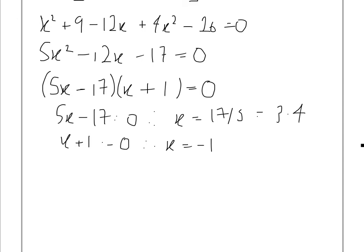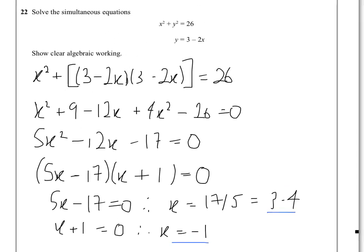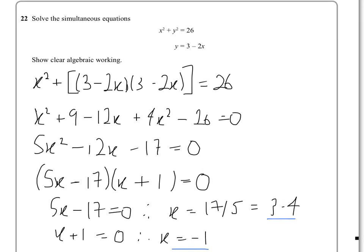Now what you do is you get both these values, both the 3.4 and the minus 1, and you substitute them into either equation, but obviously the easiest one will be this one here, substitute in place of x to get your y value.